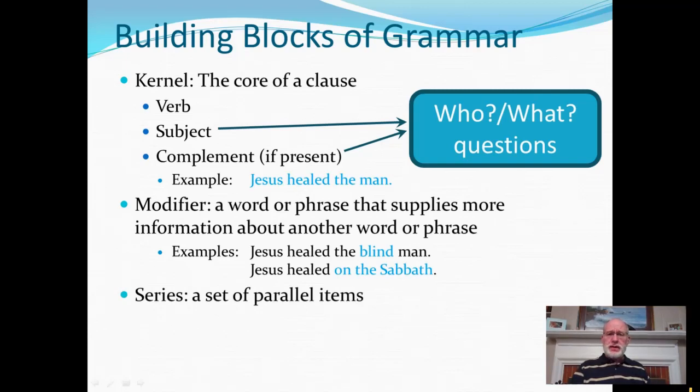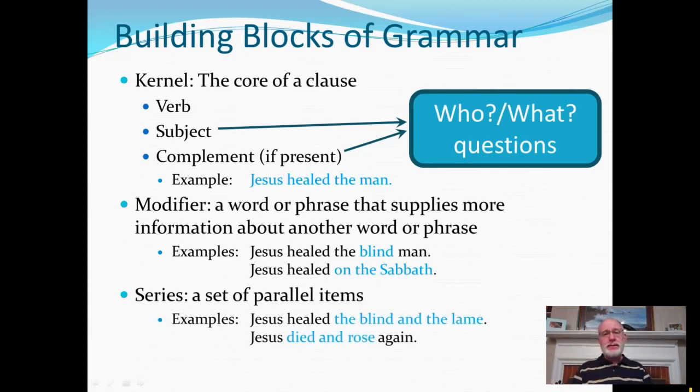All right, then one final building block for us to talk about is a series, and a series is simply a set of parallel items. So we, for supper, we had pizza and potato chips. You have a two-fold complement there. Some examples that are more biblical in nature, Jesus healed the blind and the lame. So you see two objects for the verb. Second example is one in which there are two verbs, a series of verbs. Jesus died and rose again. So any part of a sentence in some particular sentence might be a whole series of items rather than just one item.